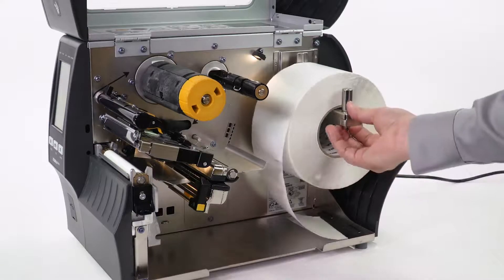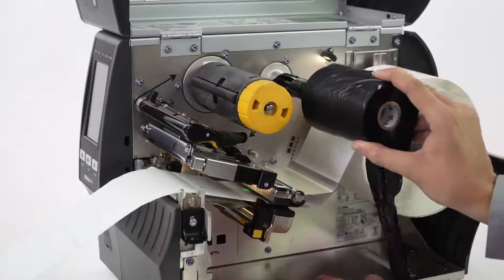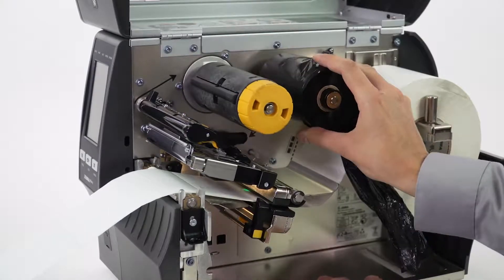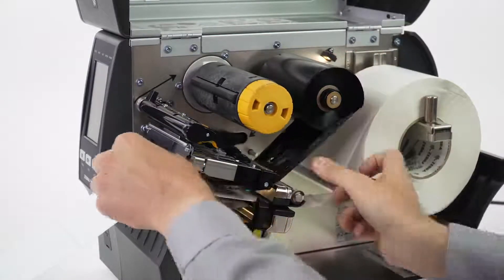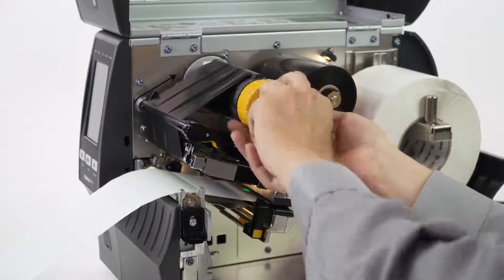Now load the media and ribbon. Make sure the media and ribbon are fully inserted. If you have any media handling options such as Peel, Line or Take-up, Cutter, or Rewind, please calibrate in those modes.